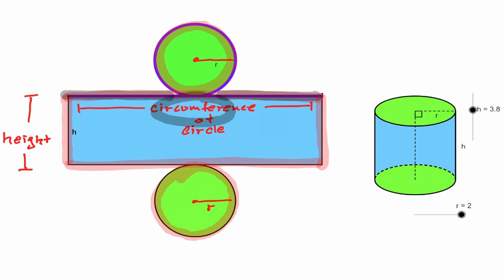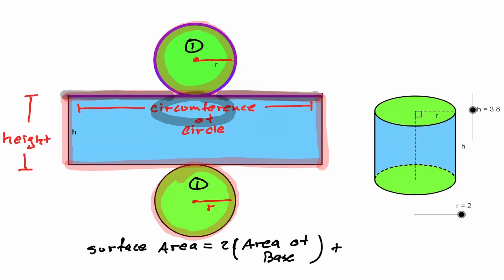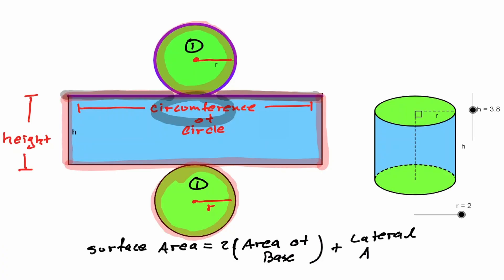Now we have defined the surface area of the cylinder. It is equivalent to the addition of the circle on the top and the circle on the bottom, which are congruent to each other — so we can say it's two times the area of the base. Plus the rectangle between those circles, which we can define as the lateral area. To find the area of this rectangle, we multiply the height times the circumference of the circle.